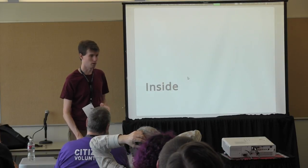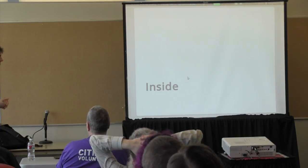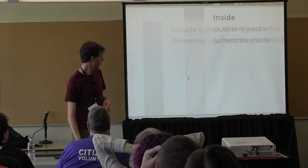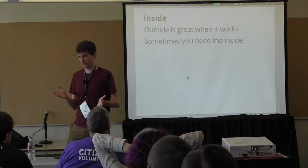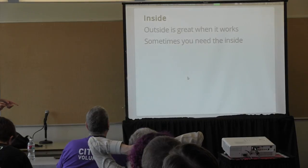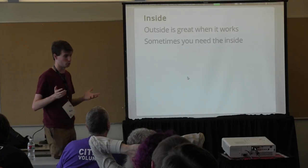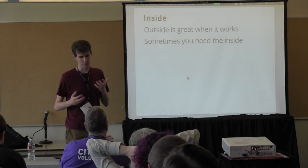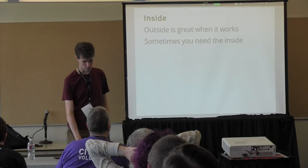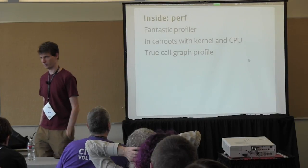The thing about inside: the outside view is great when it works — it's this universal interface, single skill set, and the process has to do a lot of things through the outside. But sometimes you do need to look inside. Sometimes what's going wrong really is just inside the program's own twisted logic and isn't directly reflected in how it talks to the outside. There are a couple of tools I'll talk about for this. One is Perf.